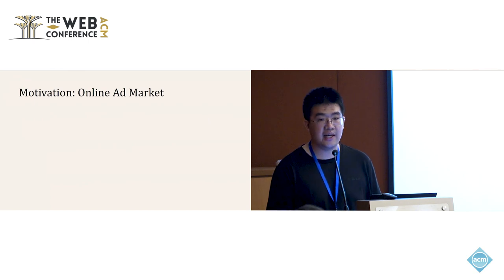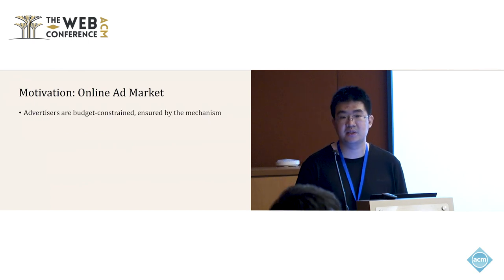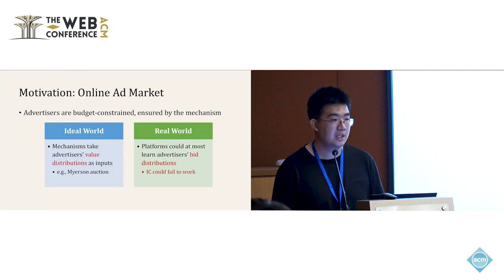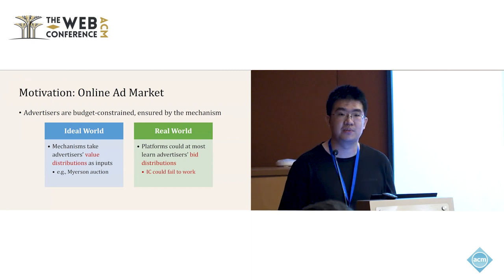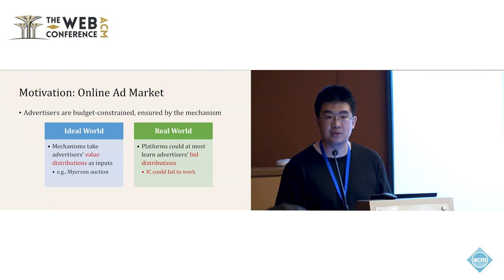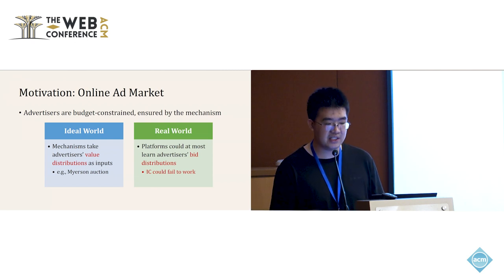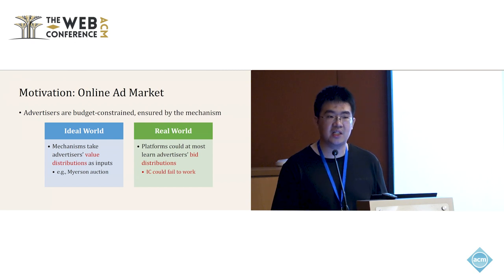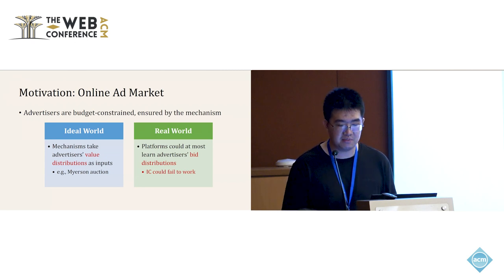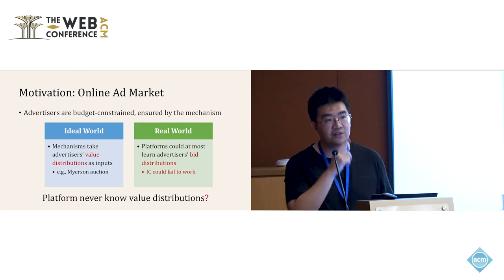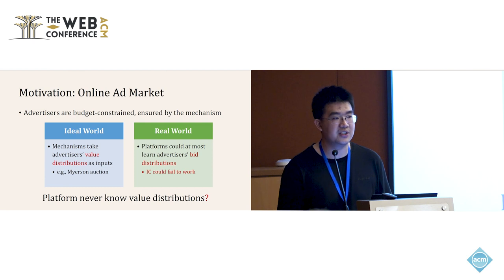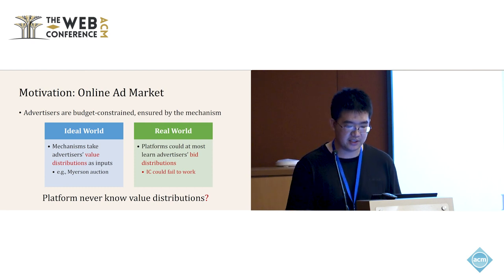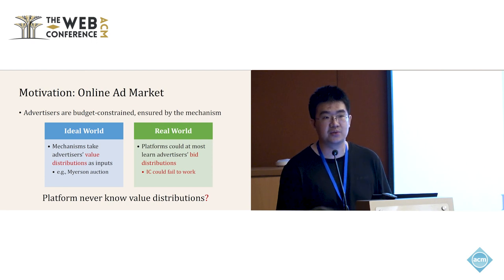This work is motivated by the online ad market, where we notice that advertisers are usually budget constrained and their budget constraints should be ensured by the mechanism. In the ideal world, mechanisms would take advertisers' value distributions as inputs — for example, the Myerson Auction. However, in the real world, advertisement platforms can at most learn advertisers' bid distributions, and even with IC or Truthful Auctions, due to the complex environment buyers lie in, these mechanisms could fail to work correctly. So the platform would never know value distributions of buyers; they can only see buyers' bid distributions, while value distributions are private information. We wonder what would happen to budget constrained auctions in this setting.